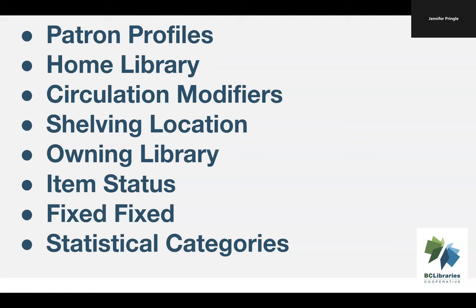When you register a visiting patron, make sure you assign them the correct home library. Circulation modifiers categorize your items and are used by Evergreen for both circulation and hold policies — items with incorrect or missing circulation modifiers may not circulate as expected. Shelving locations show patrons where to find items and can report on particular collections; an incorrect shelving location makes items harder to find and can skew your statistics.